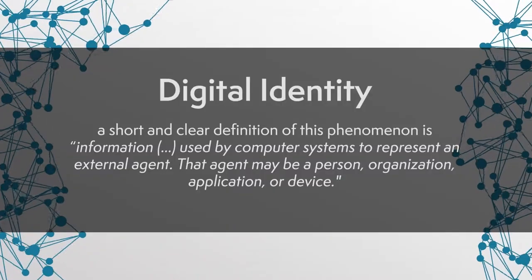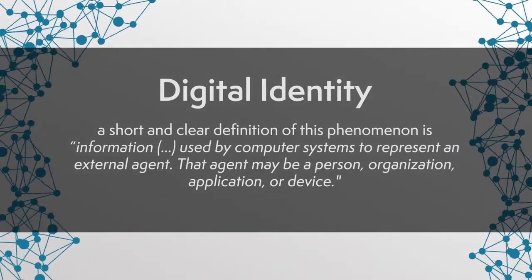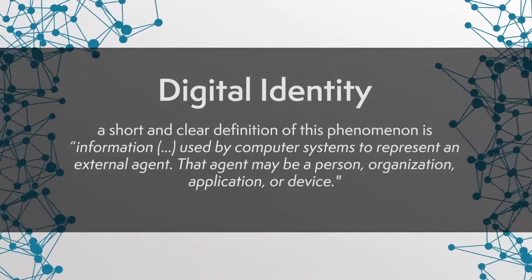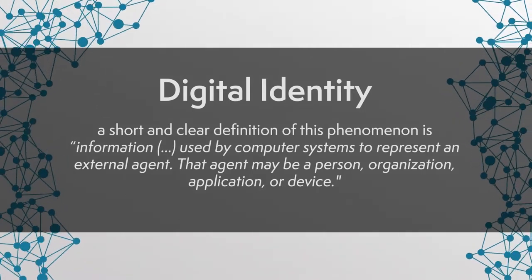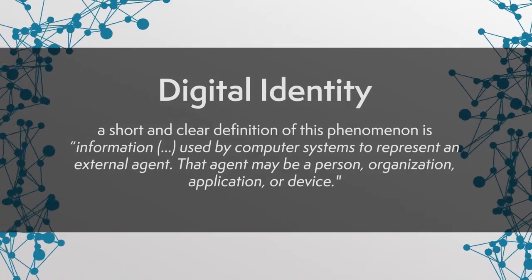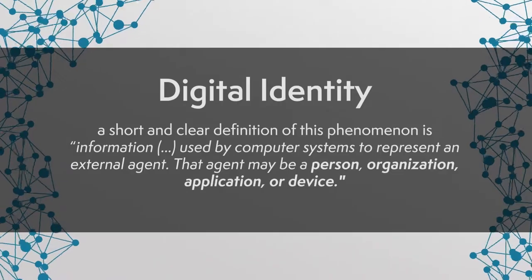What is digital identity? A short and clear definition of this phenomenon is: information used by computer systems to represent an external agent. That agent may be a person, organization, application, or device. In this episode, we'll focus on the latter two agents — applications and devices — and we'll look at identifying machines and systems digitally.